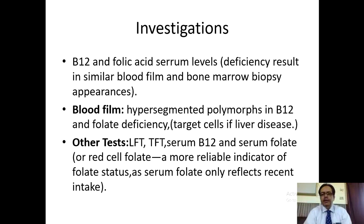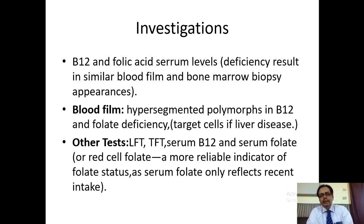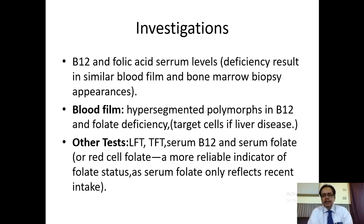The investigations required for macrocytic anemia include first those for B12 deficiency and folic acid deficiency: serum levels of vitamin B12 and serum levels of folic acid. The deficiency results in similar blood film and bone marrow appearances. On the peripheral blood picture there will be hypersegmented polymorphs in case of B12 deficiency and folate deficiency, with no target cells.